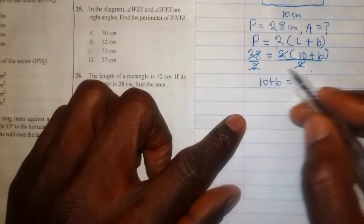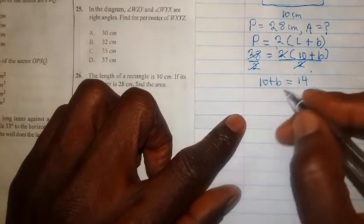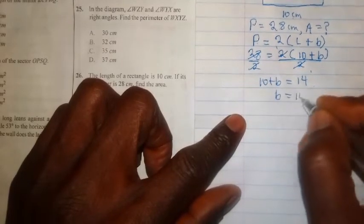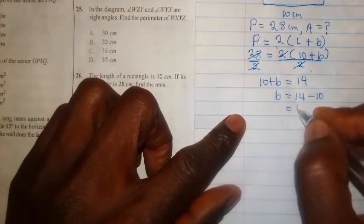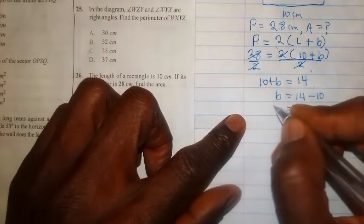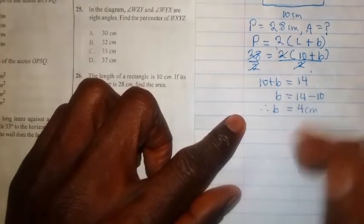Now we have to move our plus 10 to the right hand side to collect like terms. So 14 minus 10 will give us 4 centimeters. We have the breadth as 4 centimeters.